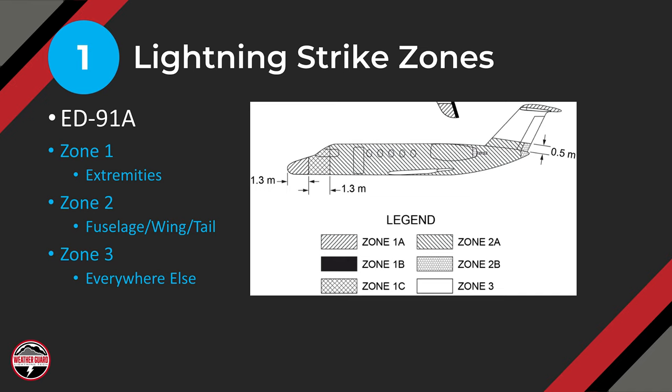We need to define where lightning is likely to attach because it has specific implications for the amount of damage likely on that component. In general, there are three zones. Zone One tends to be the extremities — the wingtips, tailtips, and nose — with a maximum current of 200,000 amps. Zone Two tends to be the fuselage and some parts of the wing and tail, with a maximum current of 100,000 amps. Zone Three is everywhere else, typically the middle of the wing. You need to go look in ED-91A for the specifics.